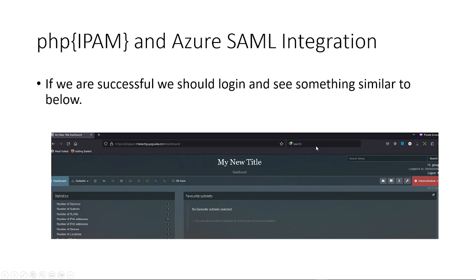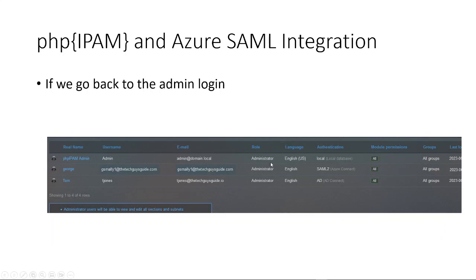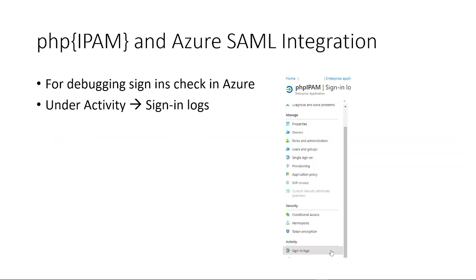Finally, if you were successful, because we made them an admin you should be logged in. Everything looks fine. If we go back to the admin login — not the incognito — you'll see that George is now logged in. Your other option to validate is to check the logs in the Azure PHP IPAM Enterprise Application — you can go to the Sign-In Logs to see what's happening there.